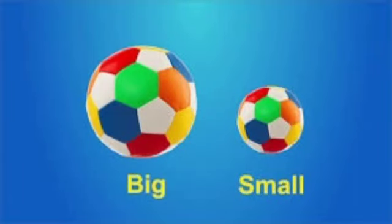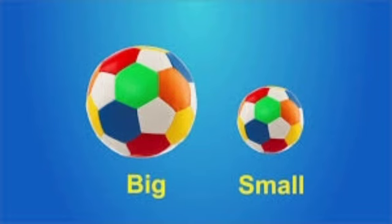Another concept is big and small. Here you observe two balls — one is a big ball and the second one is small. Big and small. Next, you can observe some pictures and tell which one is big and which one is small.